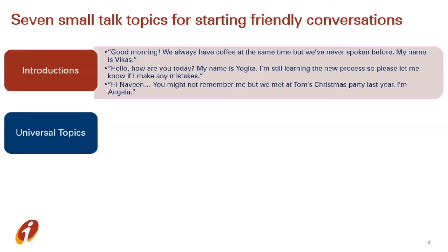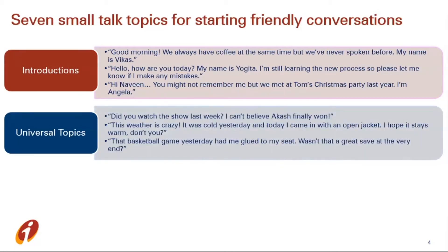Next method is universal topics. These are topics which are common to everyone — everyone knows about them. For example, it can be current affairs, weather, and so on. When you are talking about universal topics in a group, if one person doesn't know about the topic, others can add to the conversation. For example: 'Did you watch the show last week? I can't believe Akash finally won.' This is about a competition. Next example: 'This weather is crazy. It was cold yesterday and today I came in with an open jacket. I hope it stays warm.' So here they are talking about the change in weather.